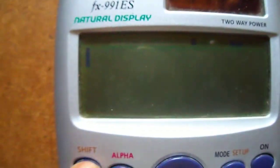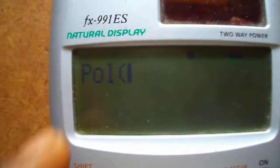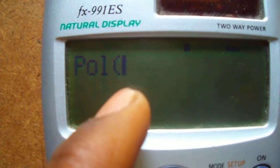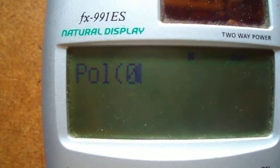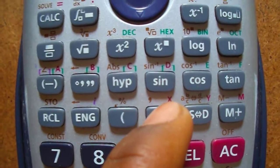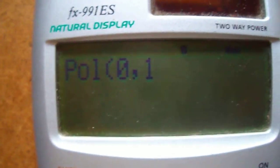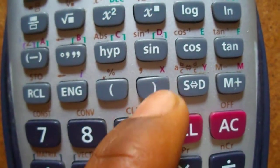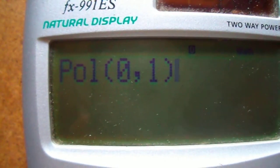Now press SHIFT and then plus button. You will get Polar and small bracket. Now plus 0. Now press comma by SHIFT and then this button. You will get comma. Then press 1. Then close the bracket using this. You will get Polar. Now press equal to.